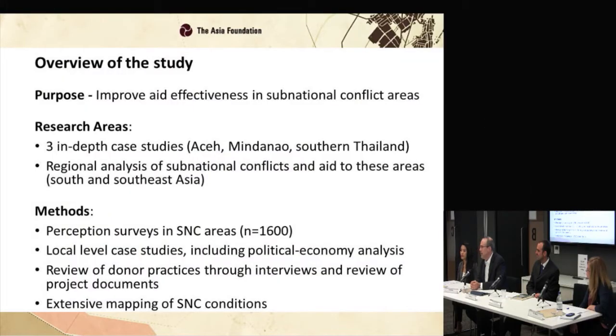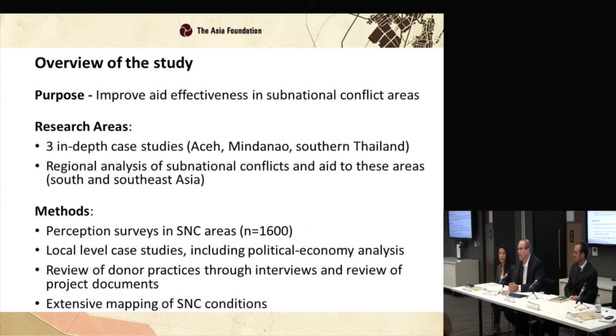What I'm going to do today quickly is give you an overview of the study, walk you through some of the key findings, and then Lisa will talk a bit more about some of the implications for donors, and Lillian is going to talk about the implications for Burma and Myanmar. The key purpose of the study was to understand what we're calling subnational conflict areas in South and Southeast Asia — basically from Afghanistan to Papua New Guinea — and try to understand how development actors are working in these regions in order to improve aid effectiveness and reduce conflict.